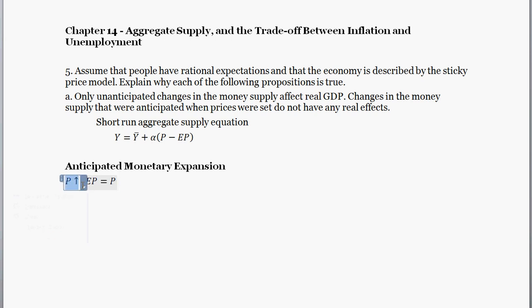So when prices go up, those firms saw that happening, nothing's a surprise to them. So they set their prices in anticipation of that extra money being spread around the economy, driving prices up. So when EP, expected prices, equals the price level, this whole term here in the Phillips curve goes to zero, because price minus EP, when those two terms are equal to each other, this all goes to zero. And short run output is just going to be exactly in line with potential output. That's what we get with an anticipated money expansion.